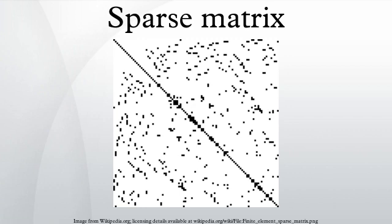The name is based on the fact that row index information is compressed relative to the COO format. One typically uses another format for construction. This format is efficient for arithmetic operations, row slicing, and matrix-vector products.